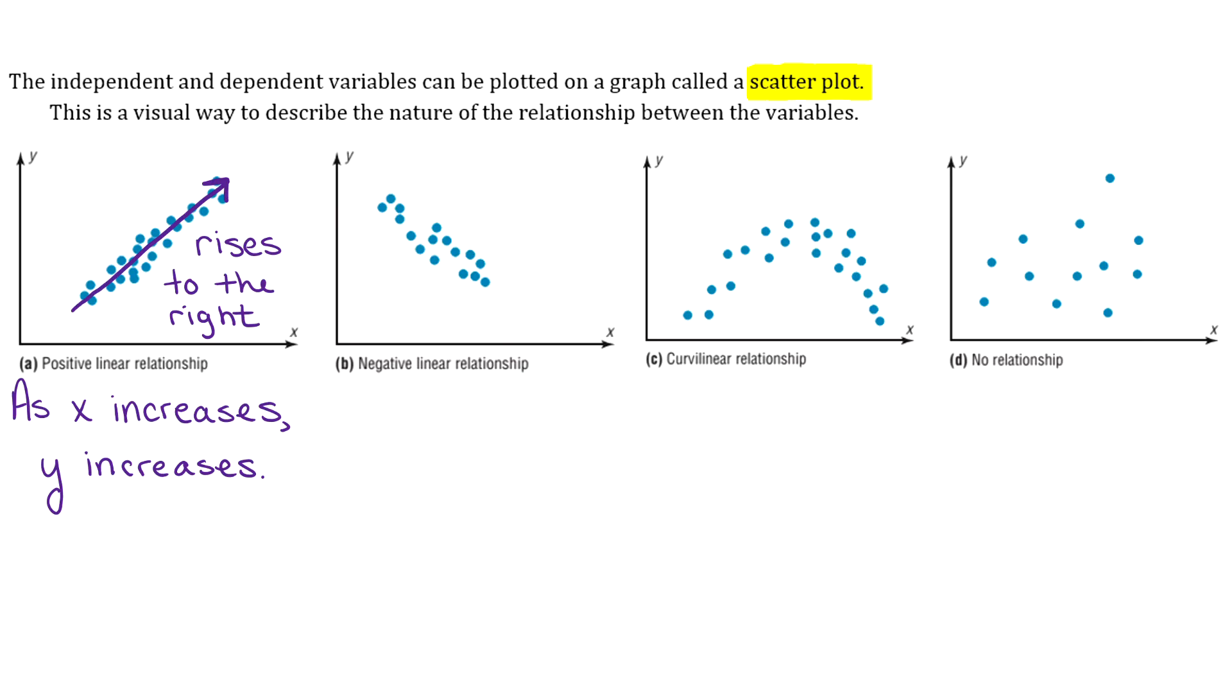You can likewise have a negative linear relationship. The points are clustered around a straight line, and it's negative because the line falls to the right. A negative linear relationship means that as your X value increases, your Y value decreases—as one goes up, the other goes down. These two types are what we'll focus on studying this chapter.